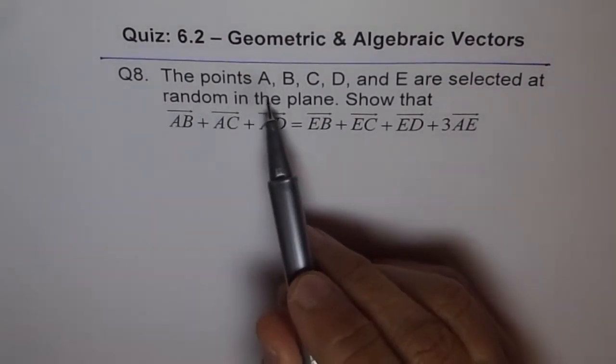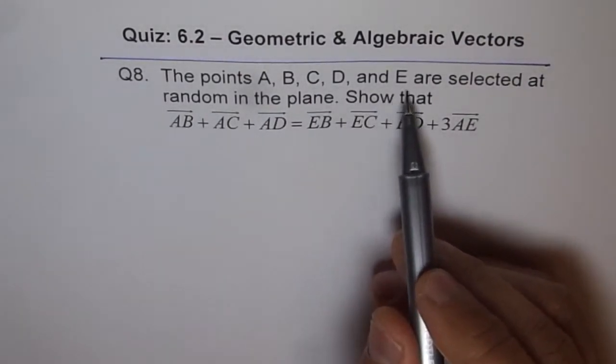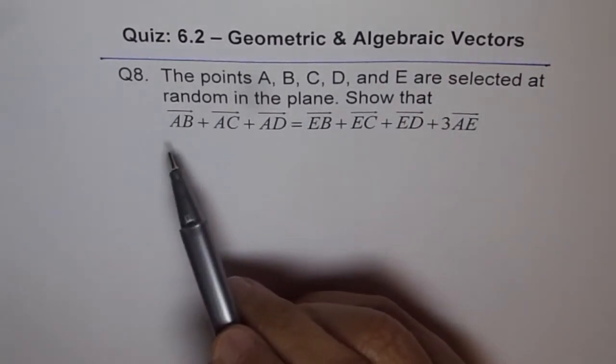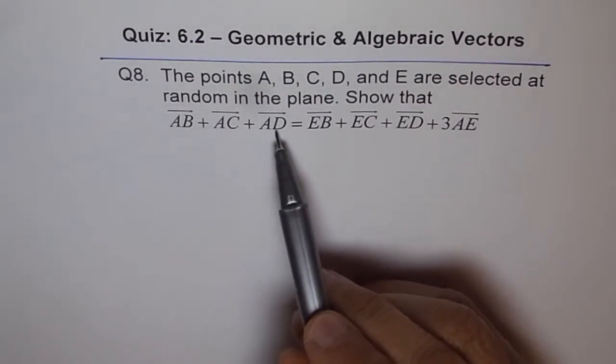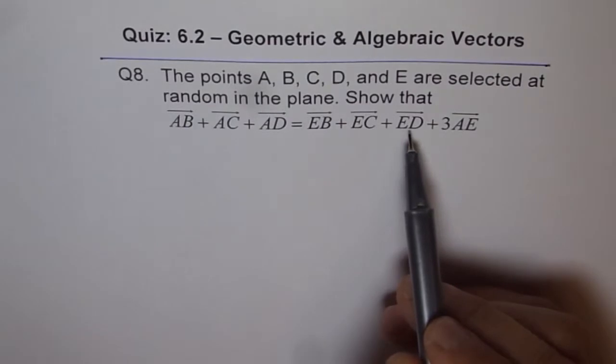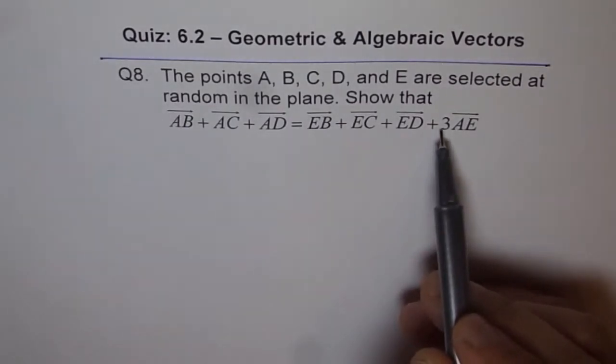The points A, B, C, D and E are selected at random in the plane. Show that AB plus AC plus AD equals EB plus EC plus ED plus 3 times AE.